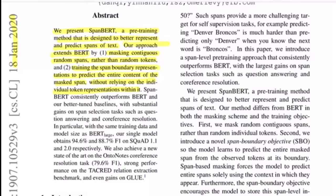They mask continuous random spans rather than random tokens. Recall that BERT was trained with masked language modeling, where you mask out 15 to 20 percent of the words in a sentence and try to predict those masked words at the output end. Here, they introduce a random contiguous span that needs to be predicted by the model instead of single tokens.